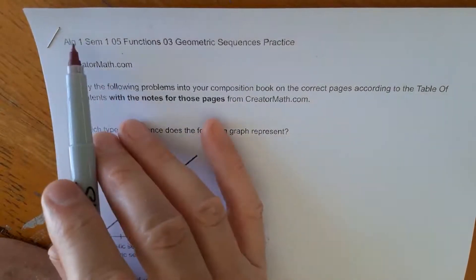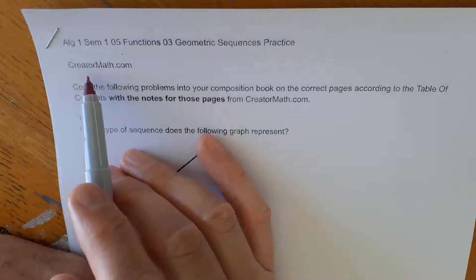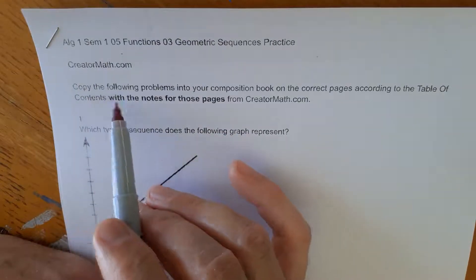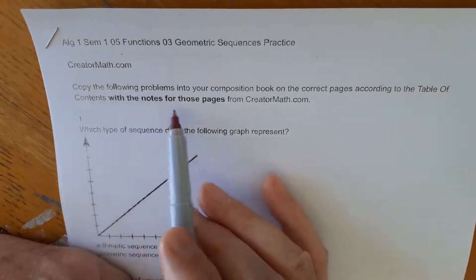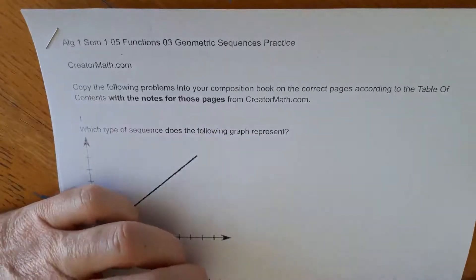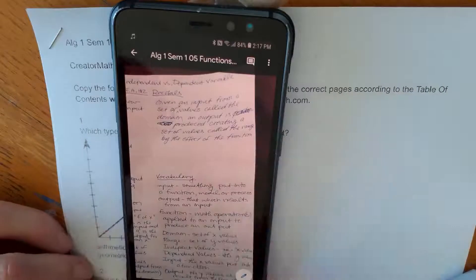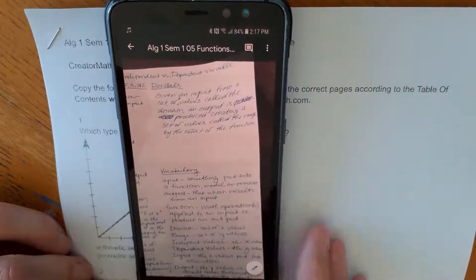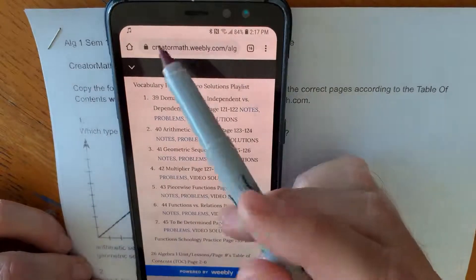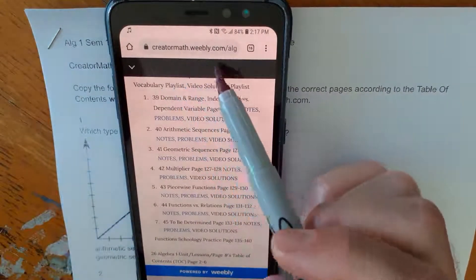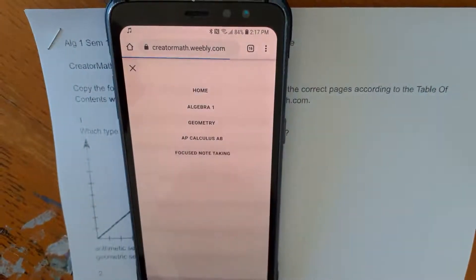It's on creatormath.com under the Algebra 1 tab. You might have to google creatormath.weebly.com to find the site from Google. The instructions are copy the following problems into your composition book on the correct pages according to the table of contents with the notes for those pages from creatormath.com. Just to try to illustrate, sometimes it can be difficult for students to find the notes. So here's the actual name of the website creatormath.weebly.com. If you type that into Google, hopefully you can find the homepage that looks like this.